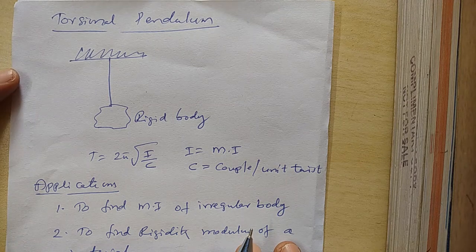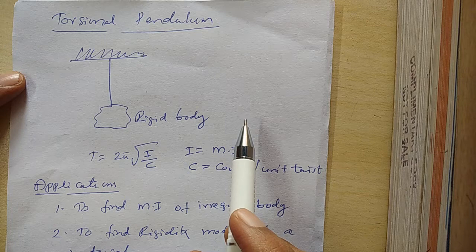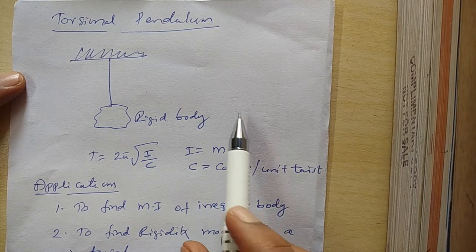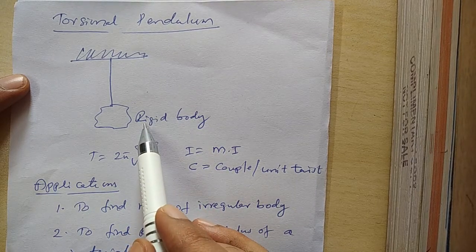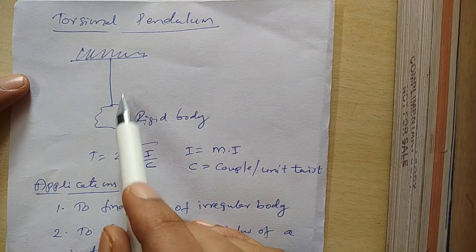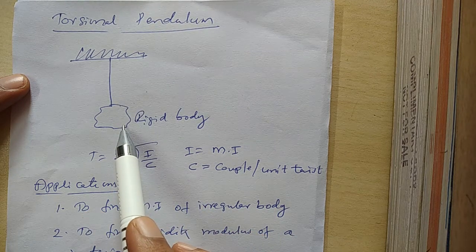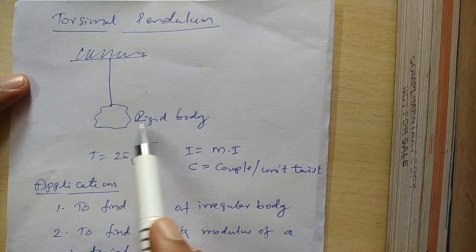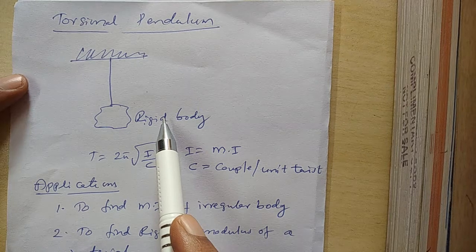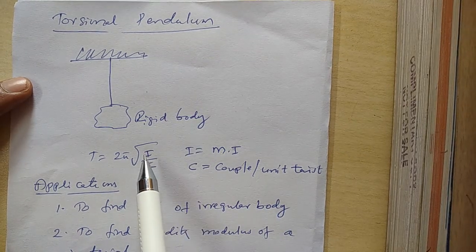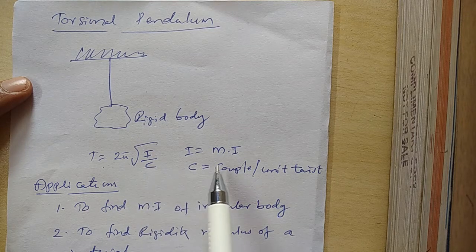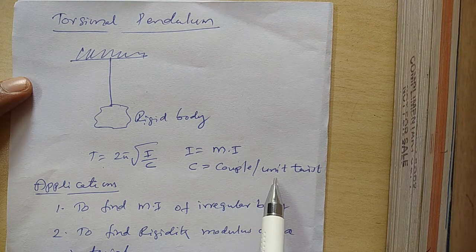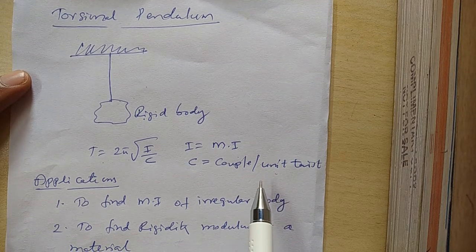We will now discuss the torsional pendulum. A rigid body suspended by means of a wire, fixed at the top, undergoes oscillations in the horizontal plane — such a system is called a torsional pendulum. The time period is given by T = 2π√(I/C), where I is the moment of inertia and C is the couple per unit twist.